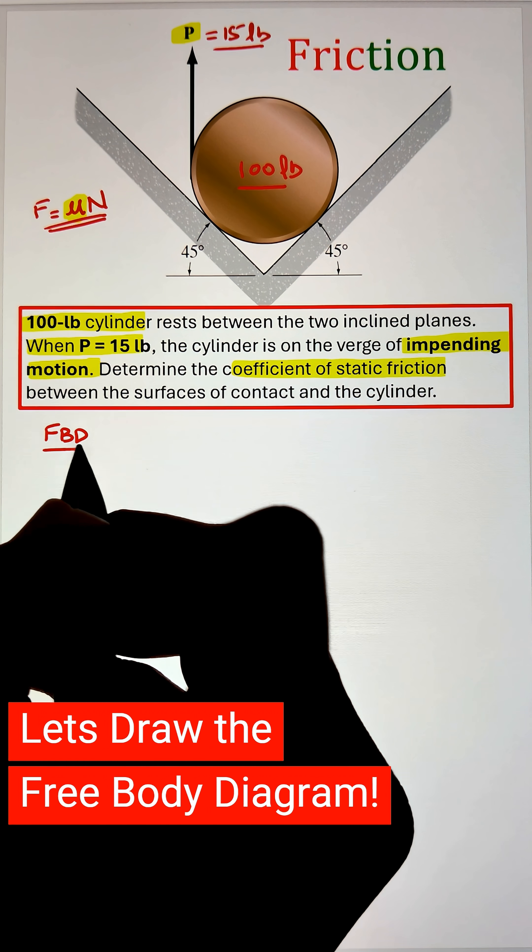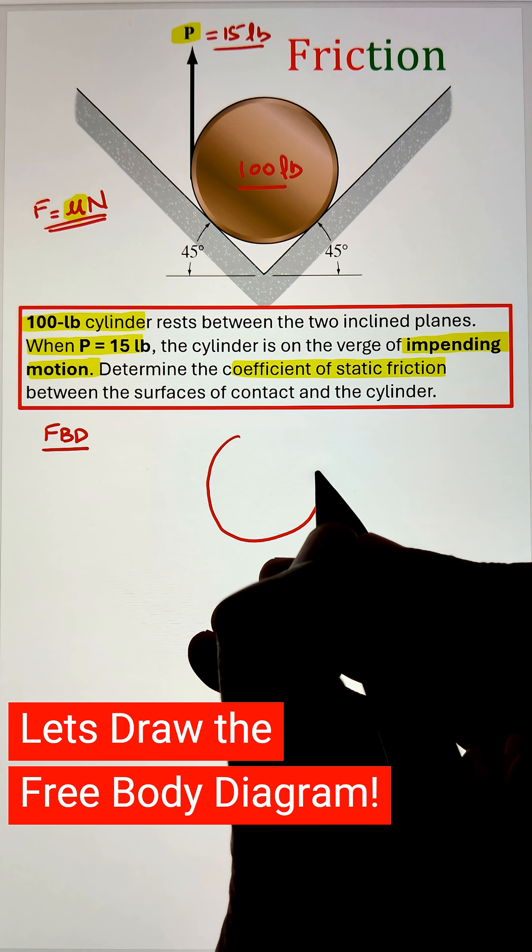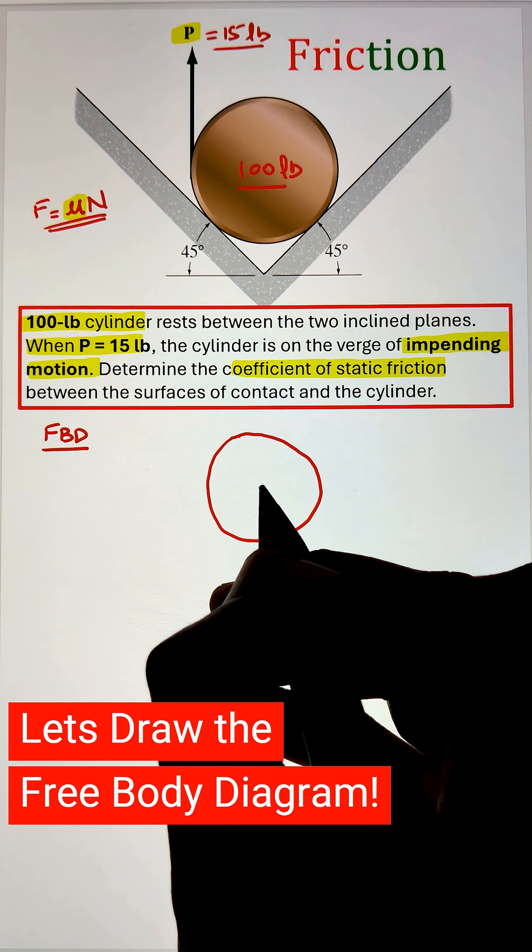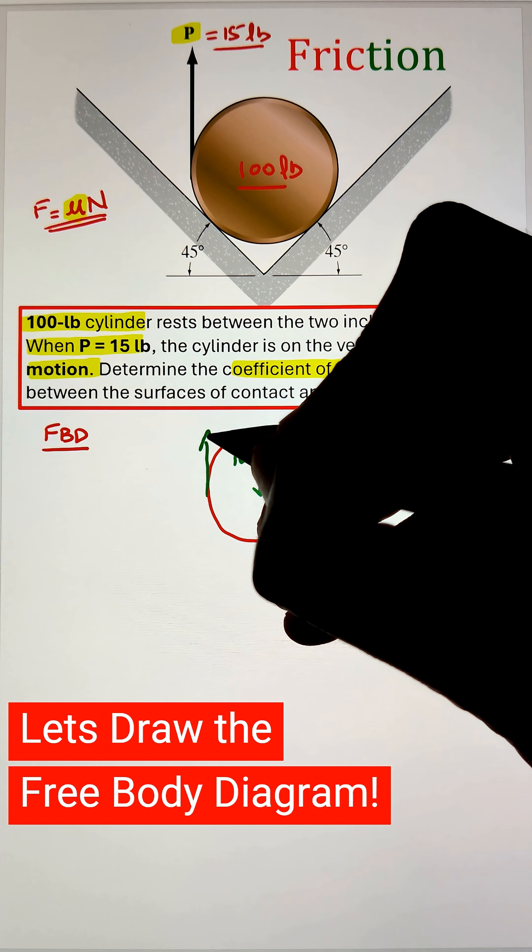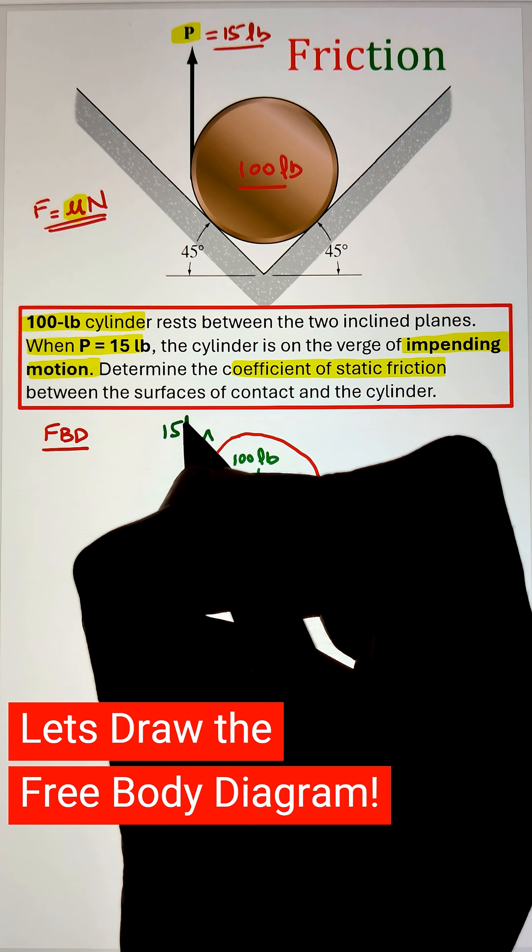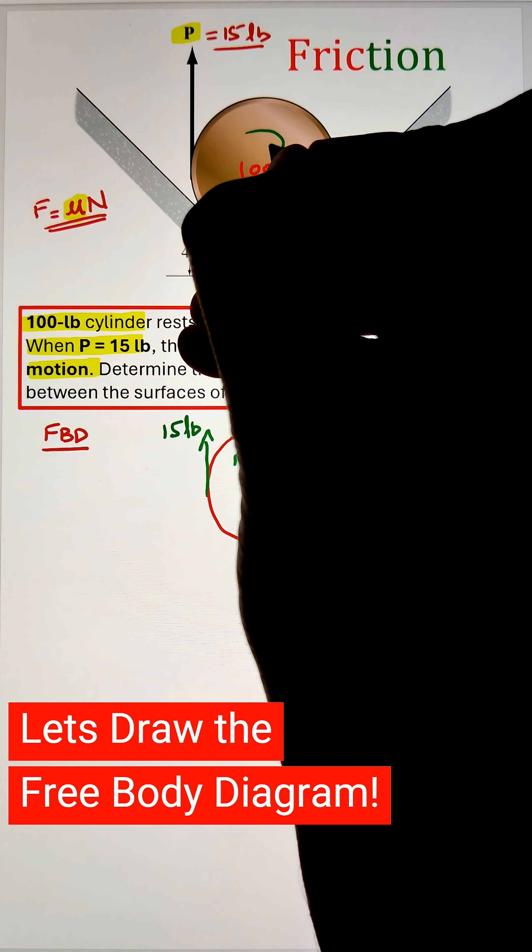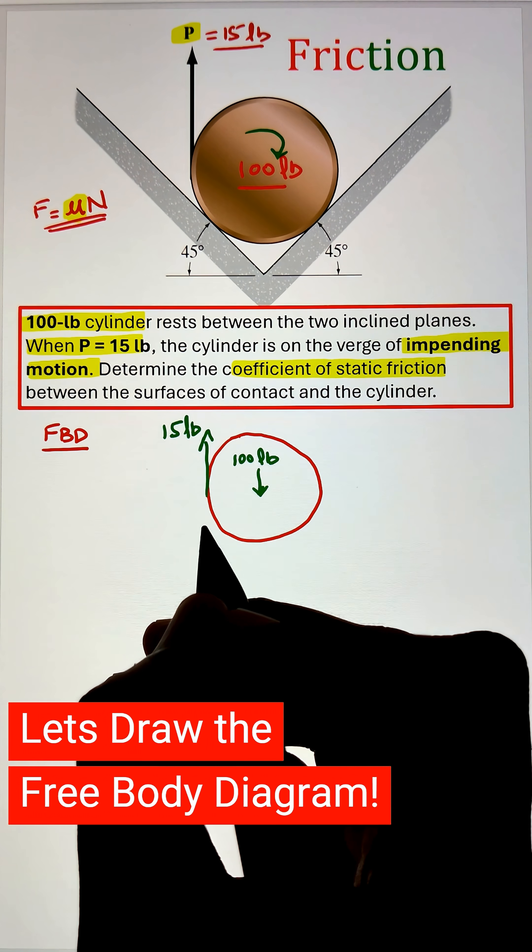So to start I have a load of 100 pounds that is the weight of the cylinder acting vertically downward, whereas a load of 15 pounds is applied in the upward direction which eventually caused the cylinder to move in the clockwise direction.